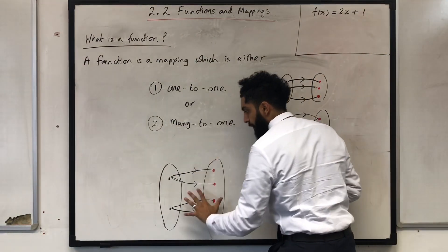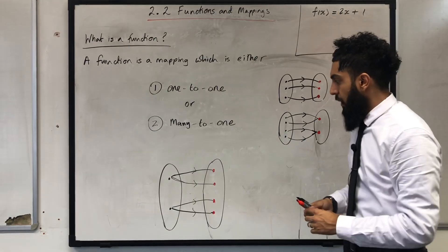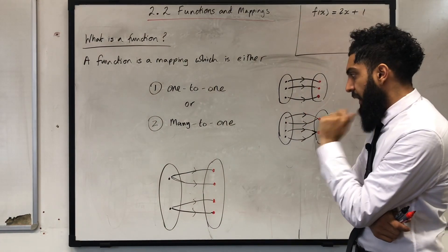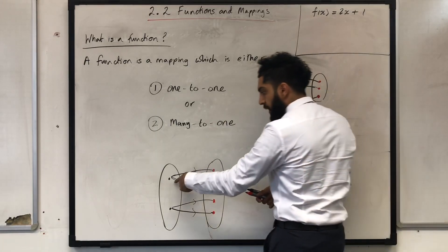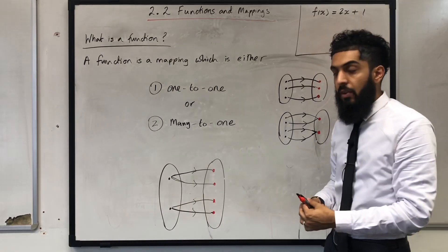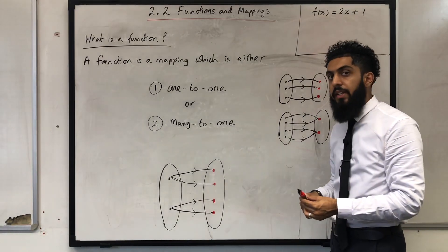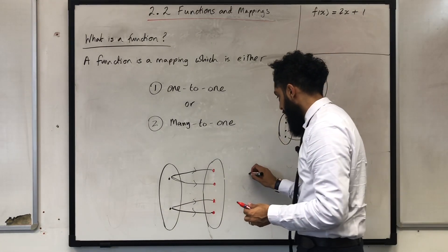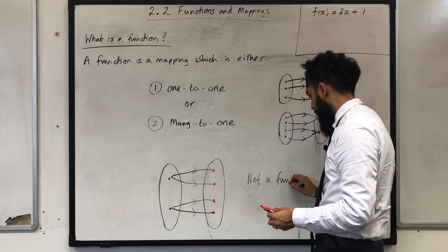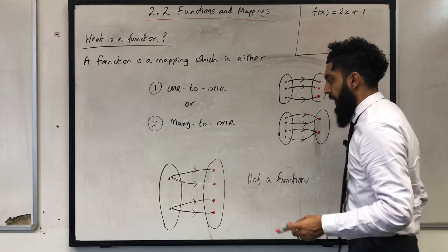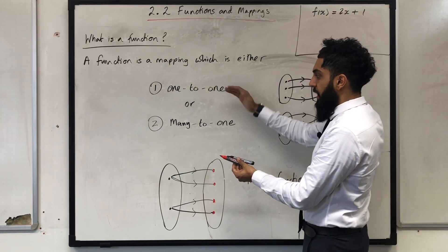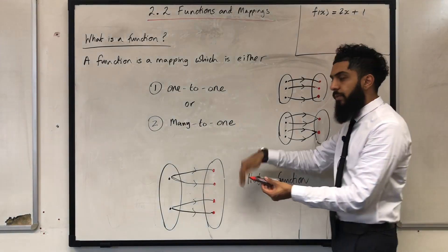Is this a function? In this case, we have one-to-many. This mapping diagram does not represent a function. It is not a function because it's not one-to-one and it's not many-to-one — it is one-to-many.